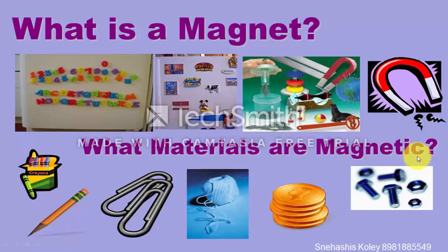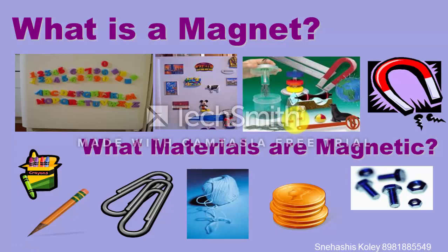What is a magnet and what materials are magnetic? There are two types of materials: magnetic materials and non-magnetic materials. Magnetic materials are those which are attracted by a magnet or can be transformed into a magnet by special means. Non-magnetic materials are those which are not attracted by magnets.